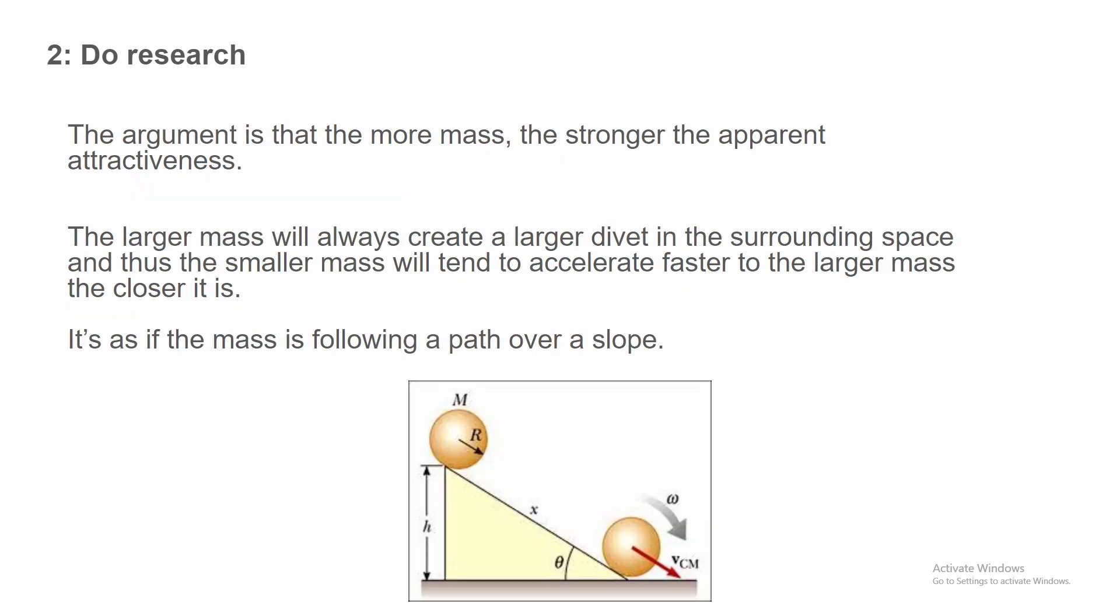The argument is that the more mass, the stronger the apparent attractiveness. The larger the mass will always create a larger divot in the surrounding space, and thus the smaller mass will tend to accelerate faster to the larger mass the closer it is. It's as if the mass is following a path over a slope.